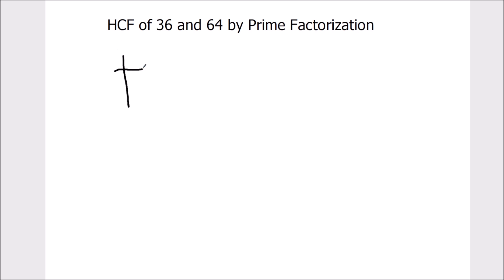Here first we will find the factors of number 36. 36 is an even number, it is easily divisible by 2. 2 times 18 is 36. Again 18 is an even number, it is easily divisible by 2. 2 times 9 is 18.